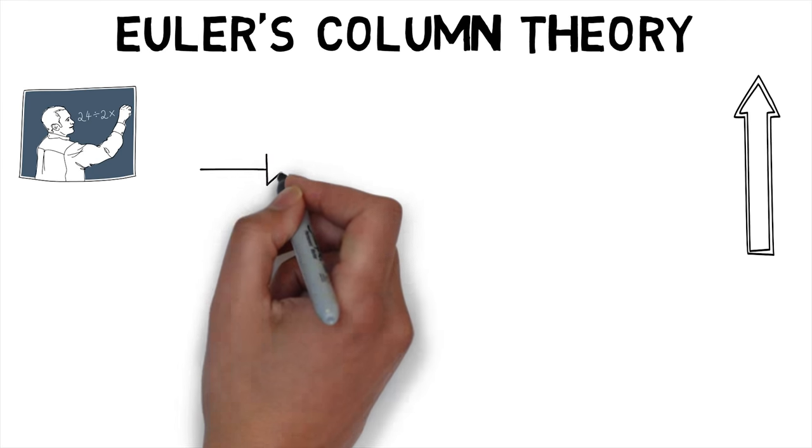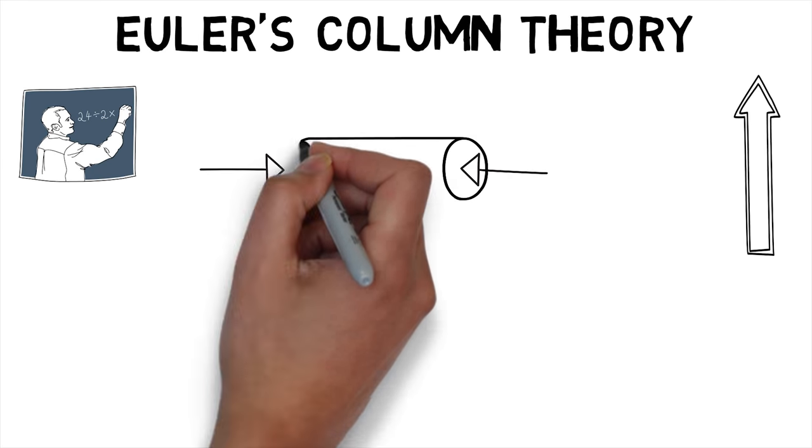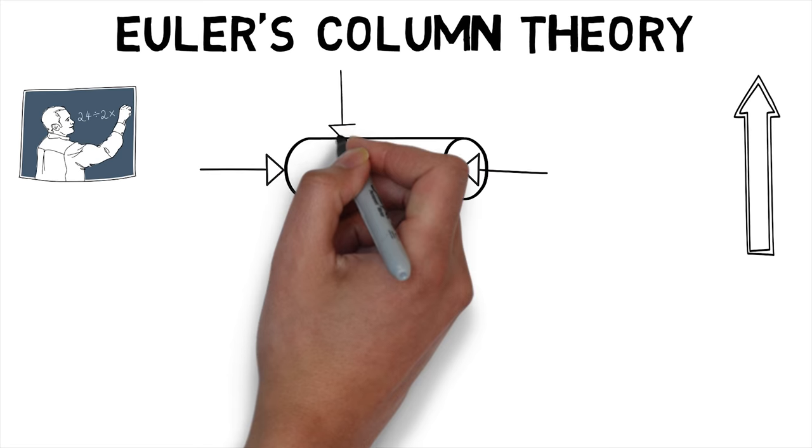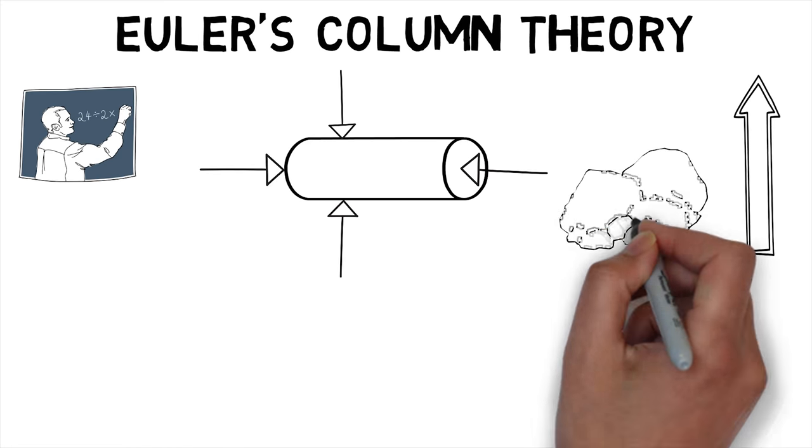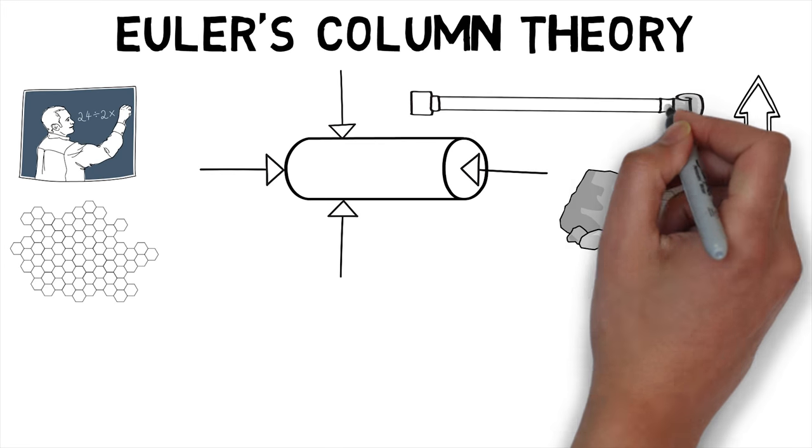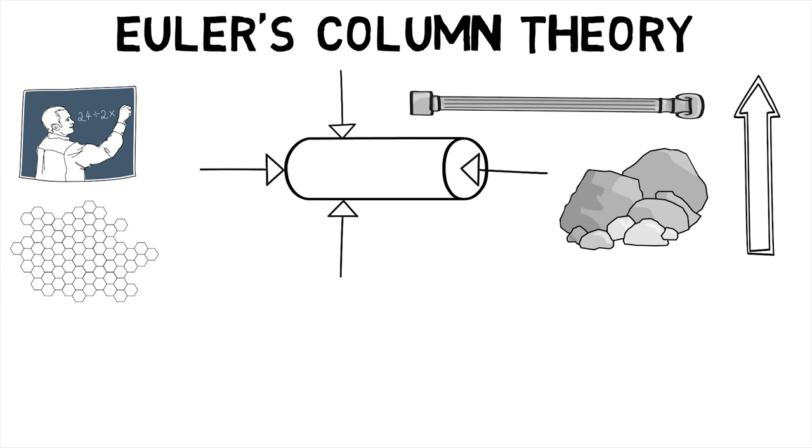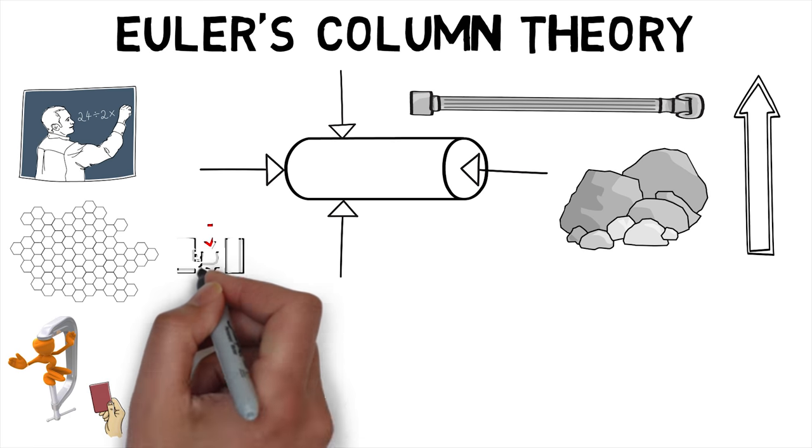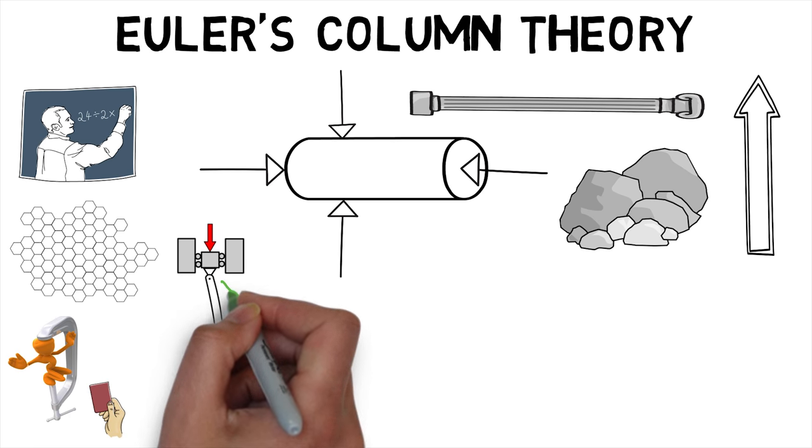The column is perfectly straight and only axial load is applied. It is of uniform cross-section throughout its length. The material is perfectly elastic, homogeneous and isotropic. The length of the column is large when compared with cross-sectional dimension. The change in length due to compression is neglected and lastly, failure is due to buckling alone.